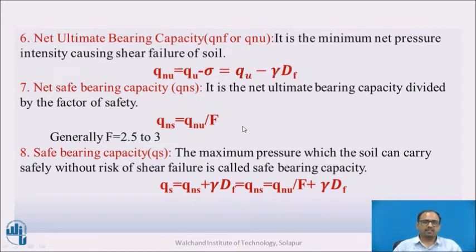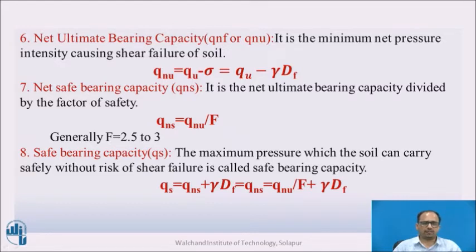Net safe bearing capacity is denoted as Q_NS. It is the net ultimate bearing capacity divided by the factor of safety: Q_NS = Q_NU / FOS. IS code generally recommends a factor of safety of 2.5 to 3. If not mentioned in a problem, you can take factor of safety as 2.5 or 3.